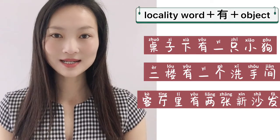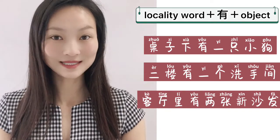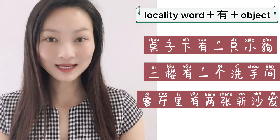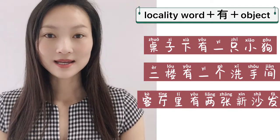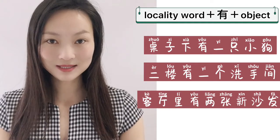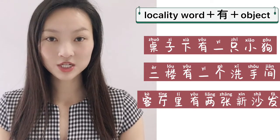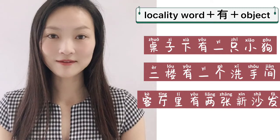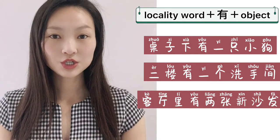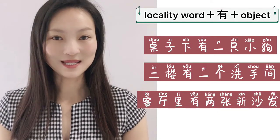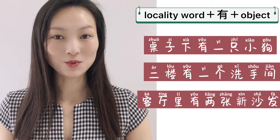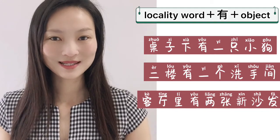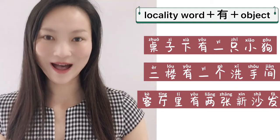客厅里有两张新沙发。 客厅里, in the living room — phrase of locality; 有, there is; 两张新沙发, two new sofas. By the way, 沙发 is a borrowed word — we say 沙发 for 'sofa.'